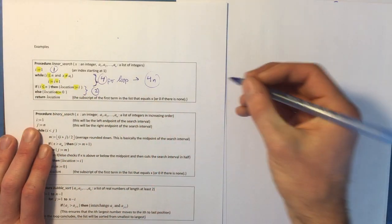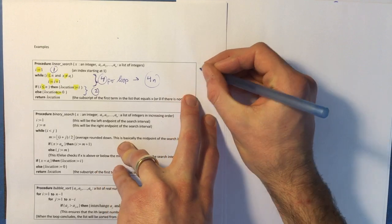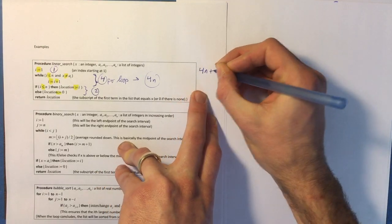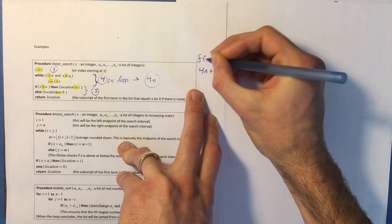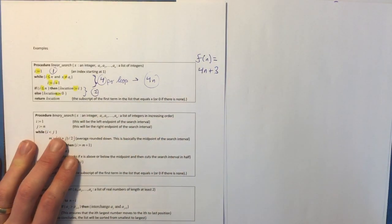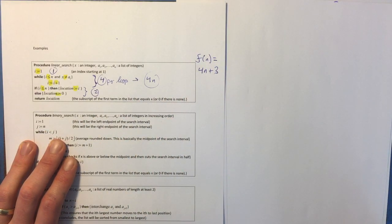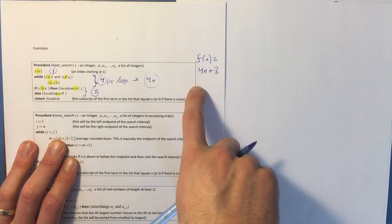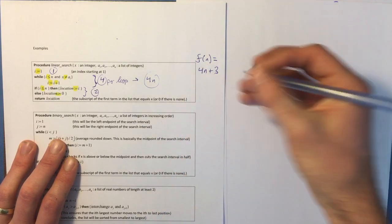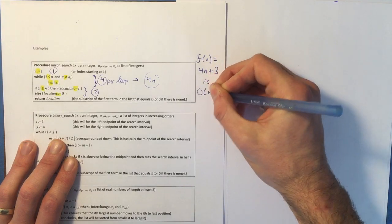So this all ends up being 4n plus 3. And that is our f(n). f(n) is 4n plus 3 for that algorithm. So that's the function that actually counts the number of constant time operations. But this is big O of n.